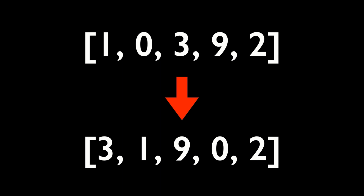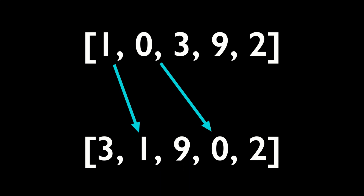So in this example, 1 will go from here to here, 0 will go here, and 9 will be here.